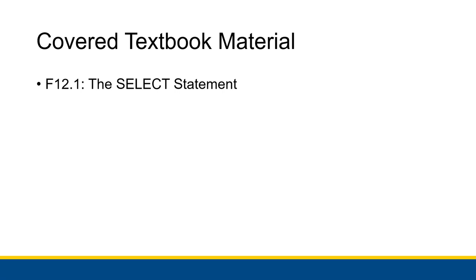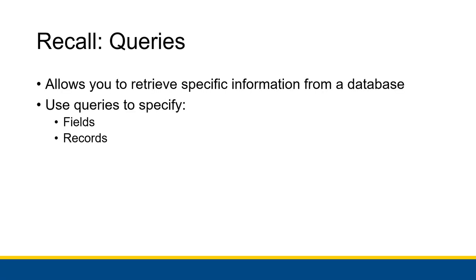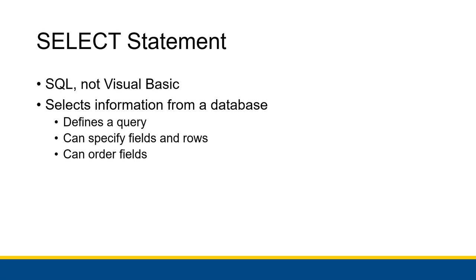In the last chapter we talked about how queries allow you to retrieve specific information from a database. You can specify certain fields you want to get, exclude certain fields, or include a field from another table using a specific relation. You can also filter out specific records, which is what we're going to talk more about in this chapter. The SELECT statement I'm going to discuss is a SQL statement, not a Visual Basic statement.